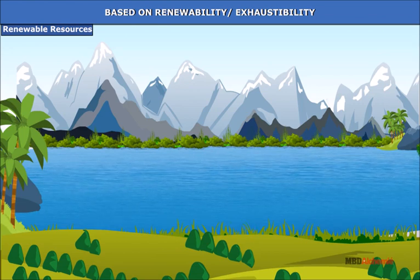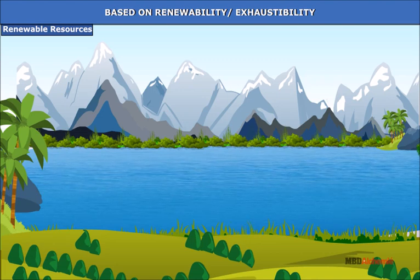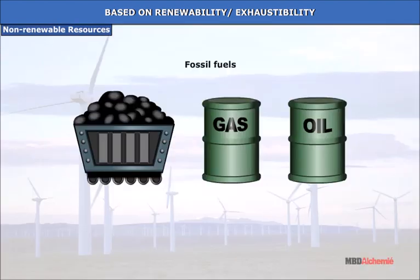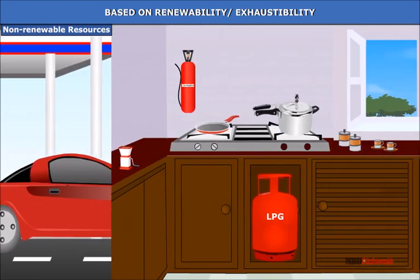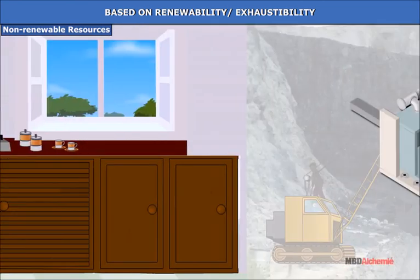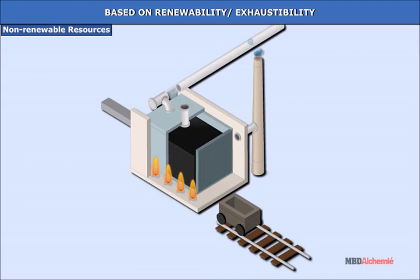Availability of fresh and pure water in a river may be obtained only under certain environmental conditions. Non-renewable resources get exhausted after use. Resources which cannot be replenished include fossil fuels such as petroleum, gas, coal and other minerals.